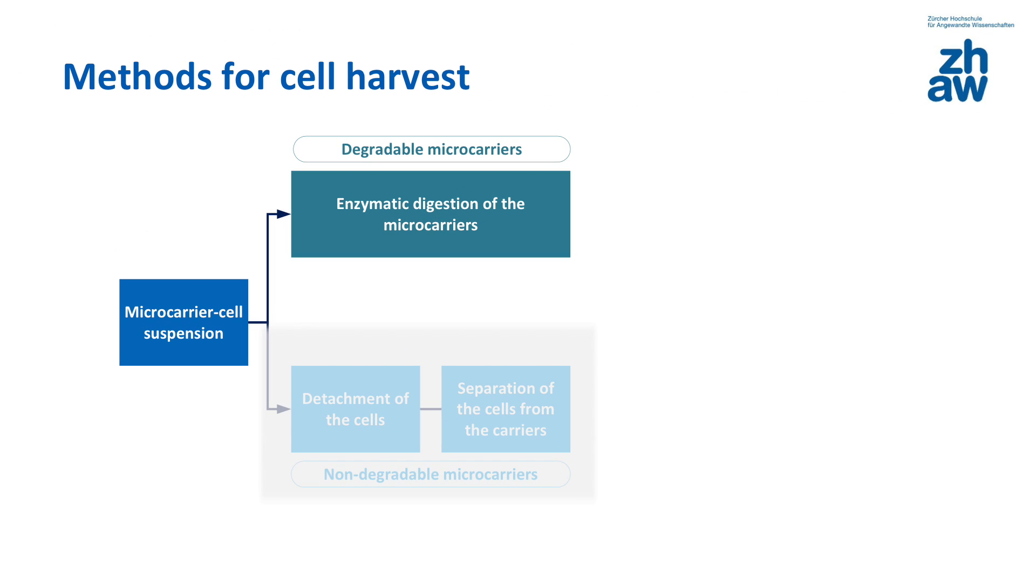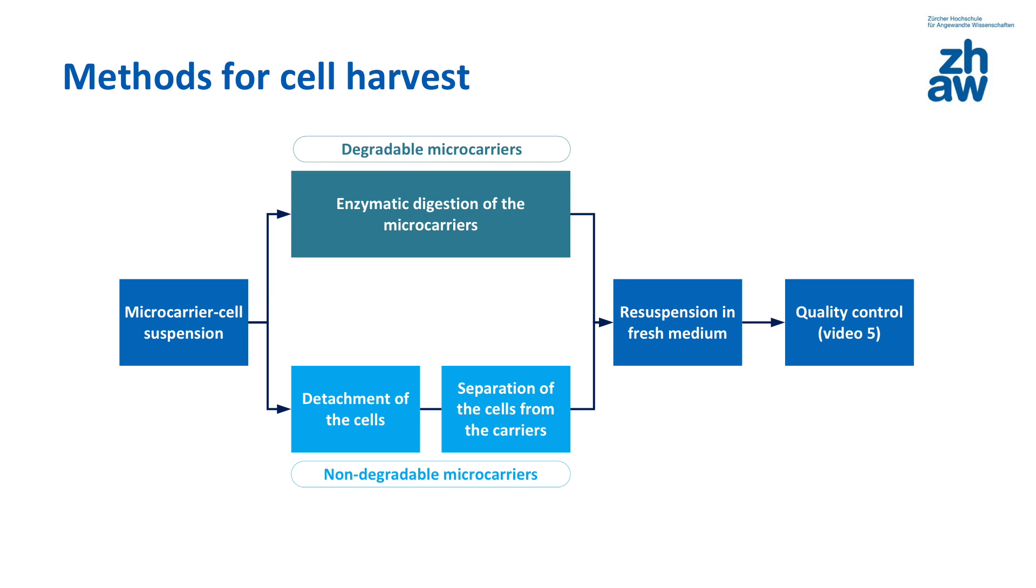Regarding cell harvest, it is worth mentioning that degradation of used microcarriers has to be taken into account. If the microcarriers are degradable, for instance collagen carriers, they can be digested enzymatically. If the carriers are non-degradable, as is the case with polystyrene-based microcarriers, the cells have to be detached enzymatically from the carriers, for example using trypsin. Subsequently, the carriers need to be separated from the cells, which can be done with a sieve. To remove the enzymatic detergent, suspension is usually centrifuged and the cell pellet resuspended in fresh medium. Before the cells can be further processed, it is important to check their quality. For this step, we would refer you to video number 5.